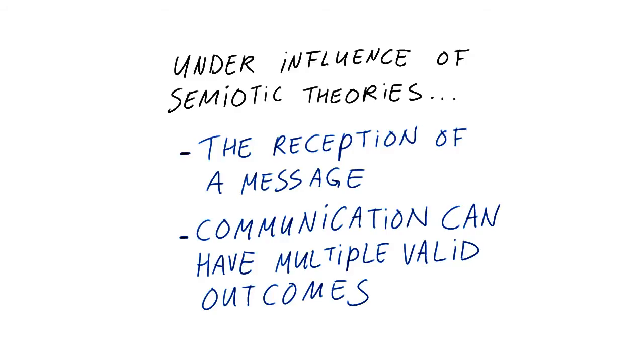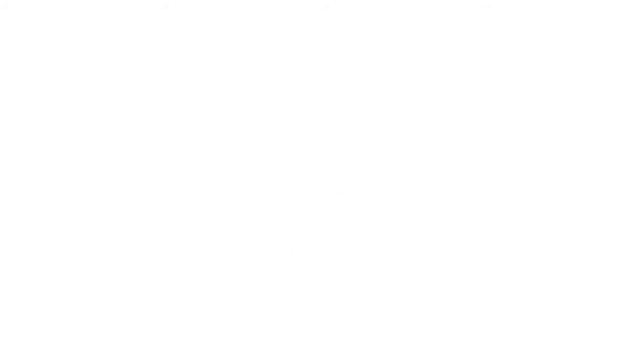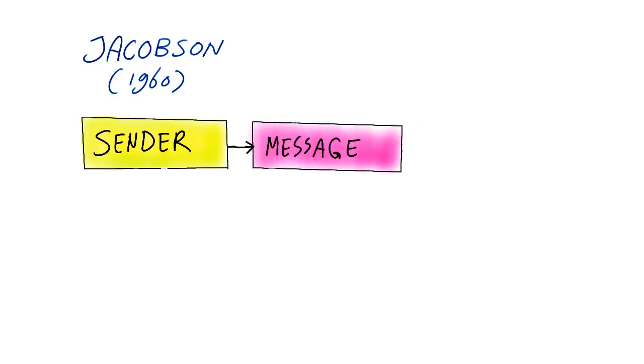Let's look at this classic model, for example, proposed by linguist Roman Jacobson in 1960. He starts with familiar elements from Shannon and Weaver's transmission model. An addresser sends a message to an addressee using a channel.